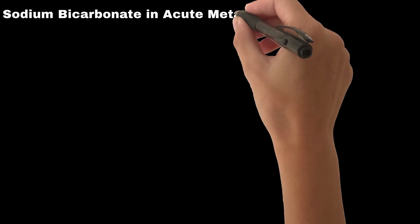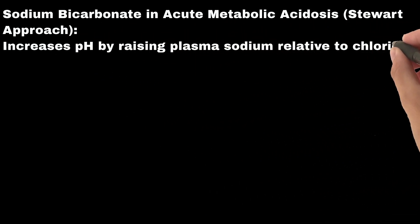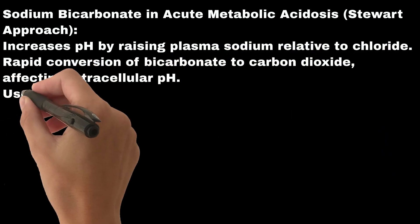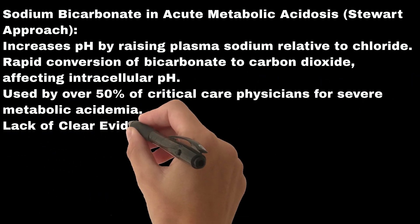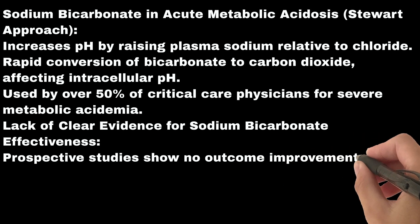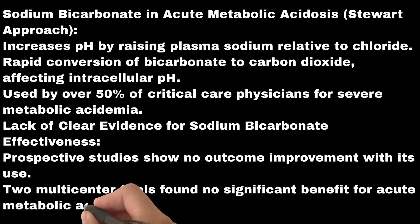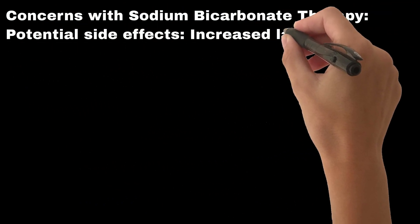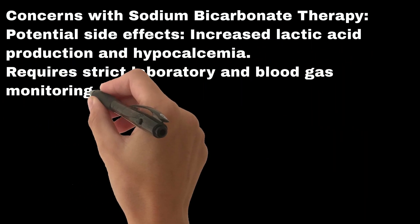Sodium bicarbonate in acute metabolic acidosis: using the Stewart approach, it increases pH by raising plasma sodium relative to chloride. There is rapid conversion of bicarbonate to carbon dioxide, affecting intracellular pH. It is used by over 50% of critical care physicians for severe metabolic acidemia. However, there is a lack of clear evidence for its effectiveness — prospective studies show no outcome improvement, and two multi-center trials found no significant benefit. Potential side effects include increased lactic acid production and hypocalcemia, requiring strict laboratory and blood gas monitoring.